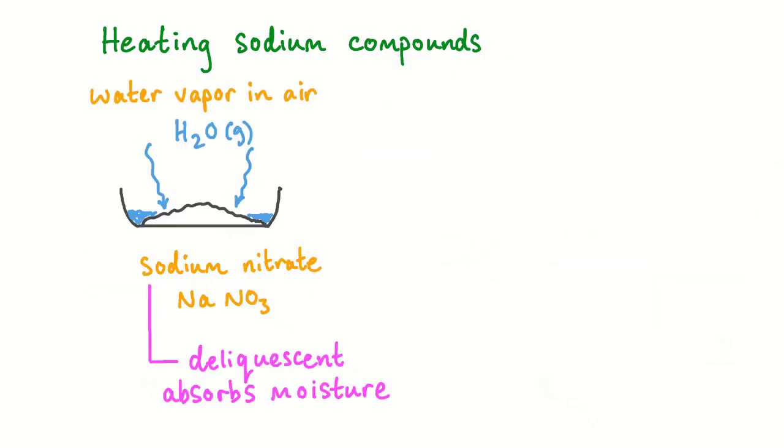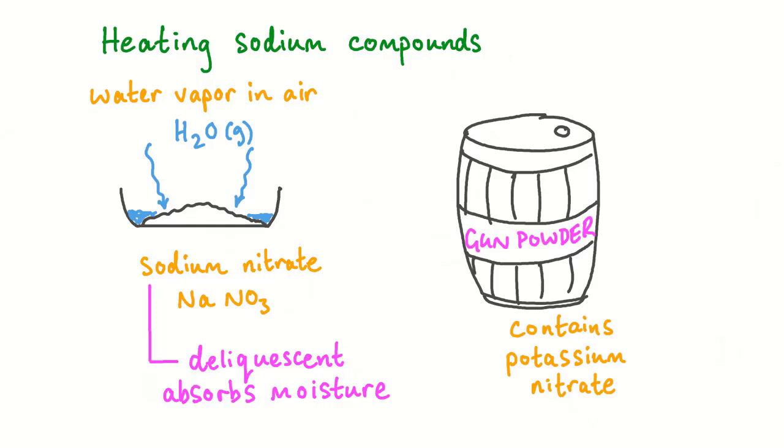Sodium nitrate is deliquescent. Left exposed to air, it will absorb water vapor. Because of this deliquescence, sodium nitrate is not used in pyrotechnic devices. In gunpowder, potassium nitrate is used instead.